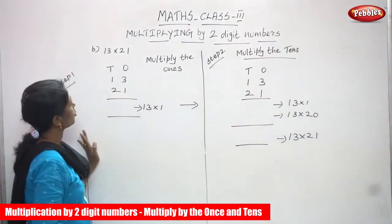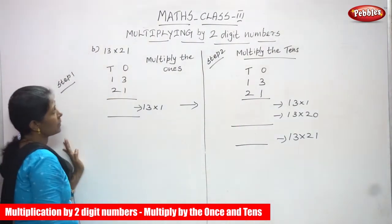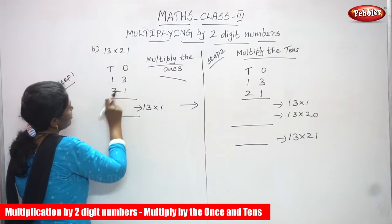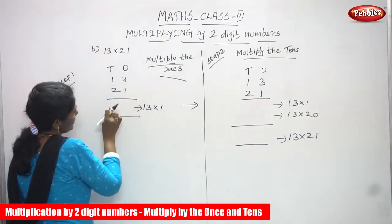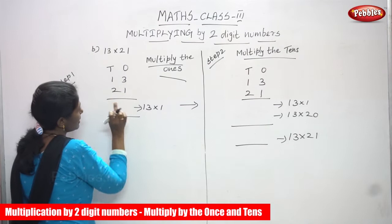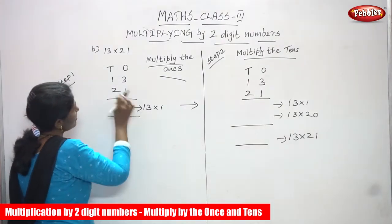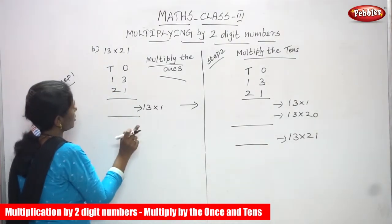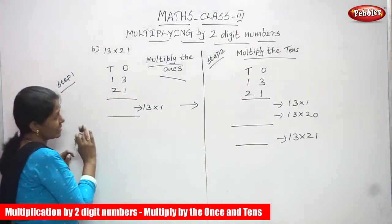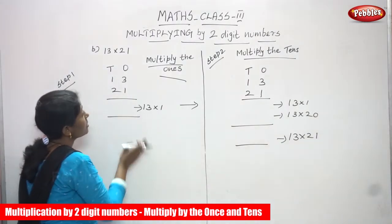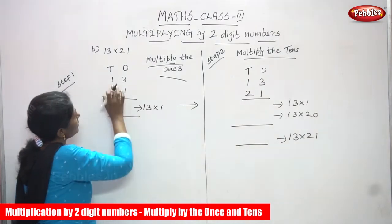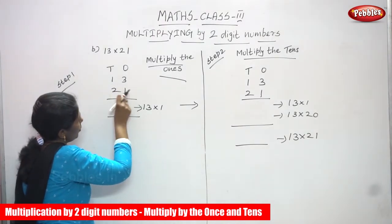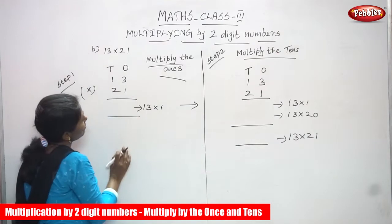Now we are going to see multiplying by a two-digit number. 13 is going to multiply by 21. So ones, tens — 13 into 21. According to the place value, you have to write. So first, 13 and 21. Now I'm going to multiply. The heading is: multiplying the ones, that is Step 1.